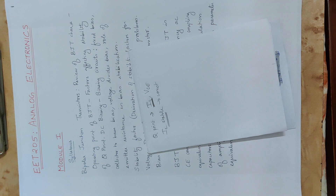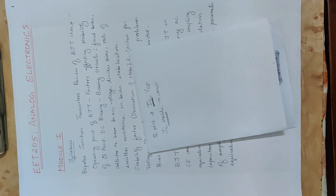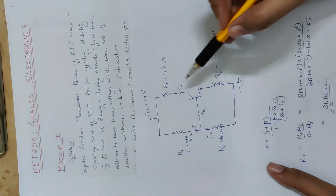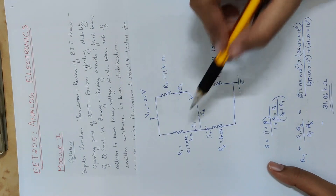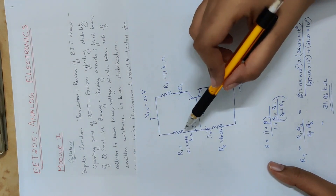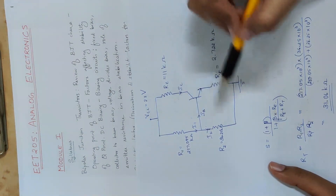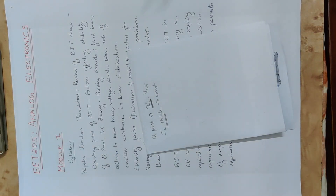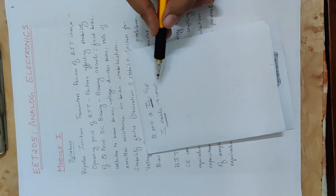Using a voltage divider circuit with resistors, we can utilize resistors to change the stabilization and keep IC constant.